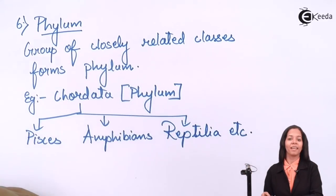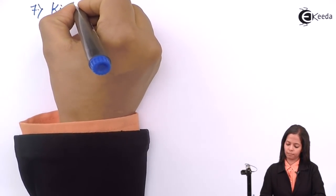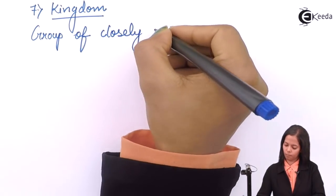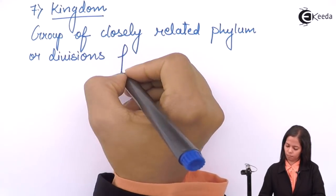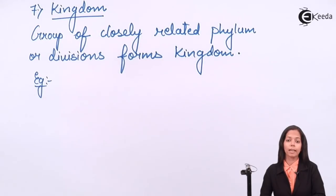The topmost category is kingdom. Kingdom is a group of closely related phyla in the case of animals, and a group of closely related divisions in the case of plants. An example is Kingdom Animalia, which consists of two phyla: Chordata and Non-Chordata.